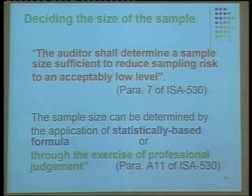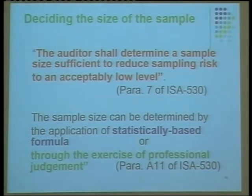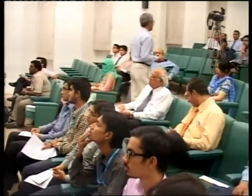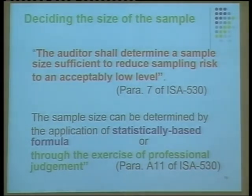Now, deciding the size of the sample: the size of the sample has a direct bearing on your sampling risk. The larger the size of the sample, the lesser will be the sampling risk. Can you bring down the sampling risk to zero? Yes — put the entire population subject to test, and the sampling risk is zero. The sample size can be decided by a statistically based formula or through the sample size tables.